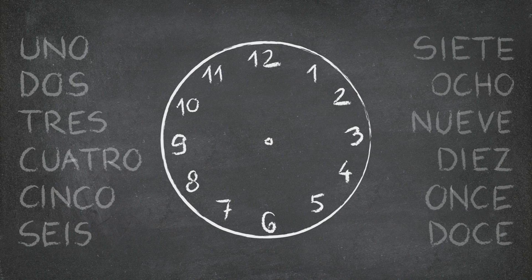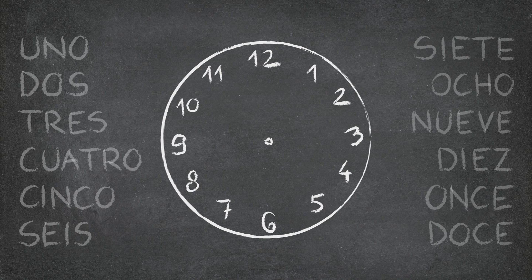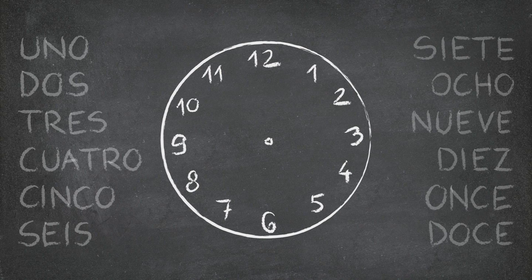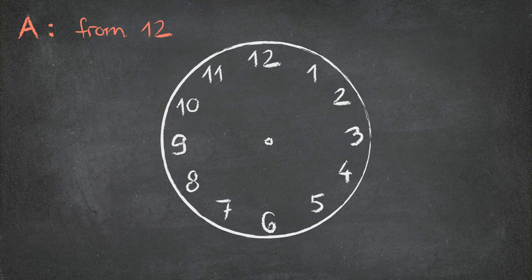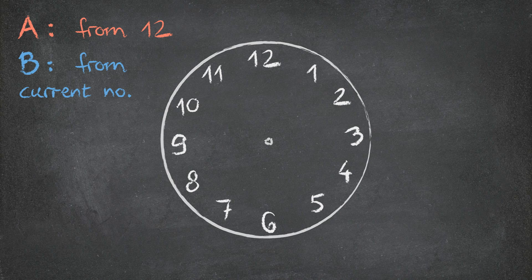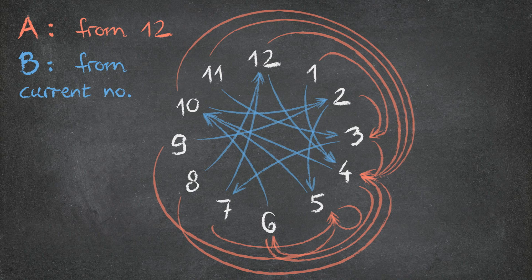To make the problem concrete, let us actually consider the Spanish clock. We have the same two types of instructions as before, spell your current number from 12, or spell your current number from your current number itself, and we can, again, draw the respective automaton. Now, we want a sequence of As and Bs which synchronize all the numbers on the clock to a single number, we don't care which one.